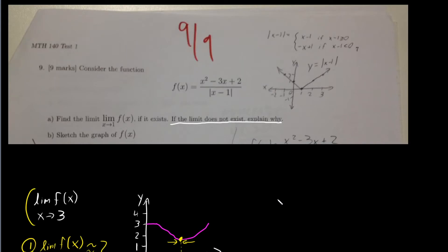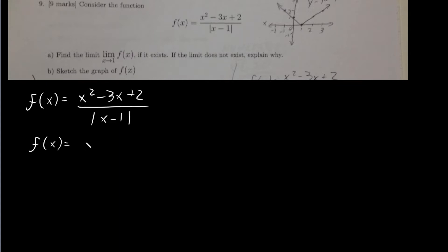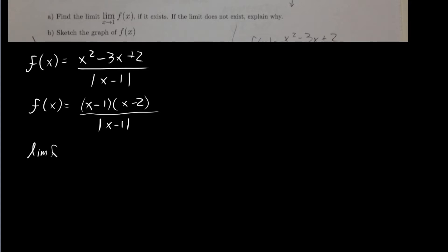Our function is (x²−3x+2) / |x−1|, and we can simplify this. We can factor the numerator into (x−1)(x−2). If we expand that out, we get x²−x−2x+2, which matches the numerator. So in the denominator we have the absolute value of x minus 1.